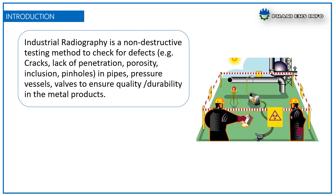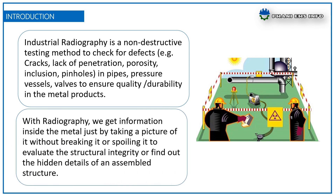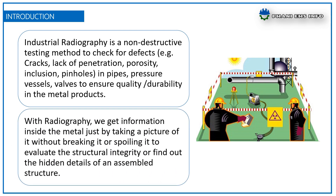Industrial radiography is a non-destructive testing method to check for defects, e.g. cracks, lack of penetration, porosity, inclusion, pinholes in pipes, pressure vessels, walls, to ensure quality or durability in a metal product.